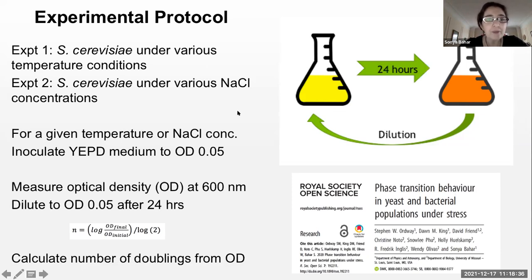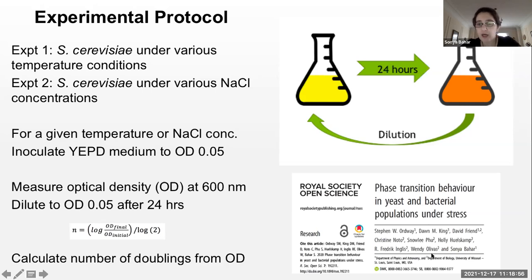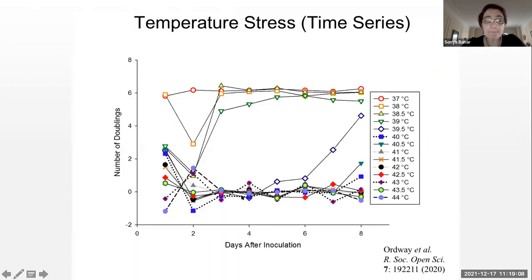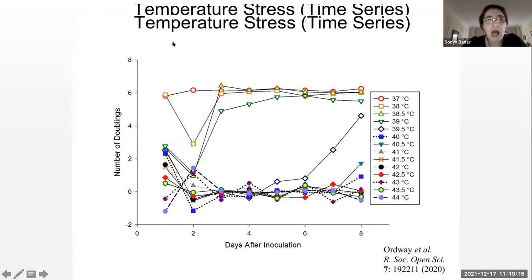We're interested in how populations decline and whether there is phase transition type behavior that can be observed here as well. We do a serial dilution experiment, looking at the number of doublings calculated from optical density. This work — the idea came from Dawn, and Stephen Ordway did a lot of the experimental work, which is a chapter in his dissertation. What we see is that if you look at the number of doublings for the yeast population with a temperature stressor, you see a very sharp divergence in behavior between yeast at lower temperatures versus higher temperatures.